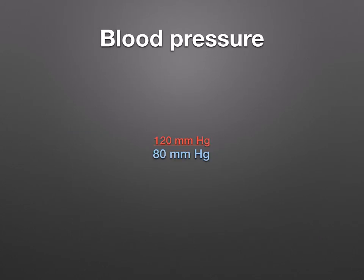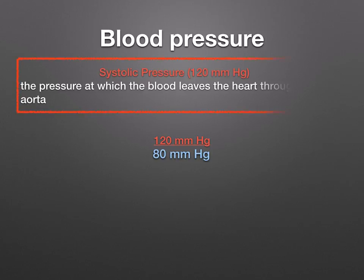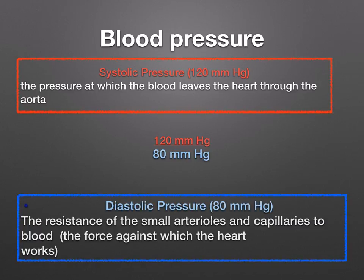To function normally, mammals must retain a minimum pressure of blood in their closed double circulatory system. The systolic pressure is the pressure at which blood leaves the heart through the aorta, and this is usually about 120 mmHg. The diastolic pressure is the resistance of the small arterioles and capillaries to the blood — it's the force against which the heart works.